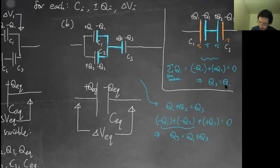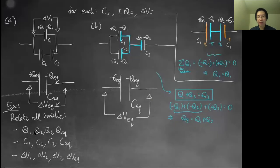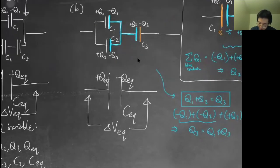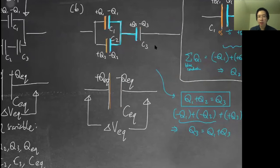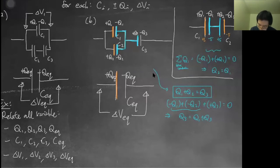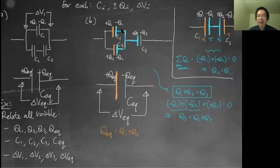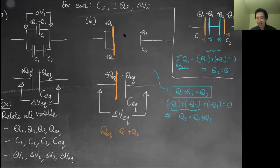Now how do I relate q-equivalent? Using the orange side: equivalent capacitance means that if I replace c1, c2, c3 with one big capacitor, it should do the same job. If I erase the blue middle part and combine those wires, I basically have the bottom scenario. So I can learn from the orange side that q-eq equals q1 plus q2.